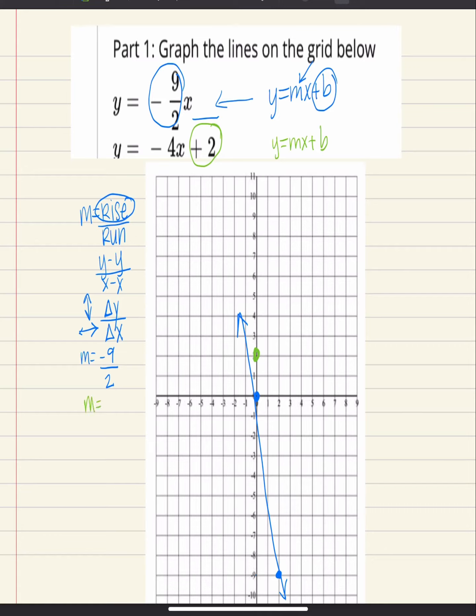And then in this case, because our slope is negative 4, we're going to put it over 1 because negative 4 divided by 1 is just negative 4. So that means we're going to rise negative 4 and run positive 1.